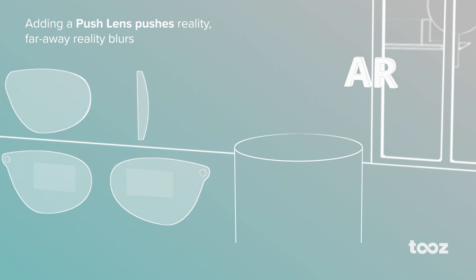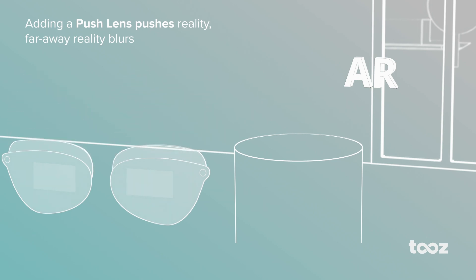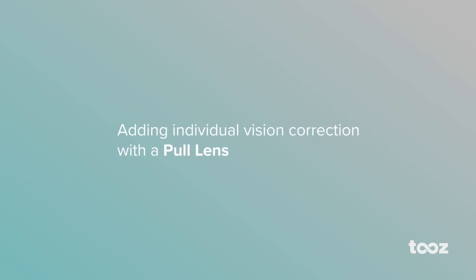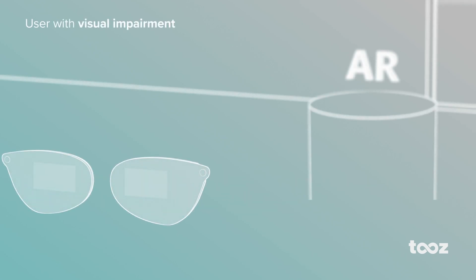With increasing positive power of the push lens, the targeted visual plane for the AR content moves closer towards the wearer. In the second step, we add an individual pull lens. Because without a pull lens, for users with visual impairment, everything appears blurred.